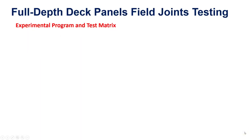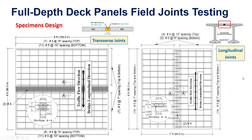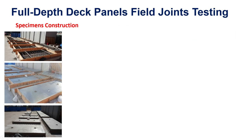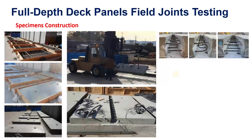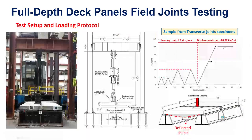The second part expanded this into full-depth precast panel joint testing. The experimental program included four specimens — mostly transverse joints, with some longitudinal joints for deck bulb tees. For the three transverse specimens we tested both straight and loop reinforcement detailing, and with the 1% steel fiber ratio we used a slightly wider joint to compare against the 2% case. This is the typical specimen design for both transverse and longitudinal joint specimens. Construction mimicked real practice: panels were precast separately, aligned to create the joint, and filled with the non-proprietary HPC.